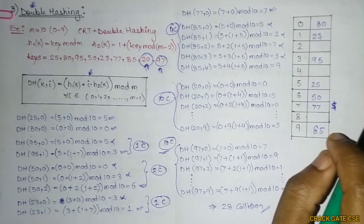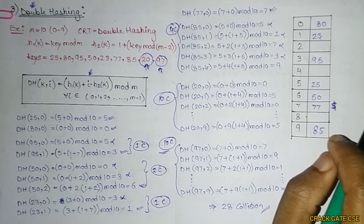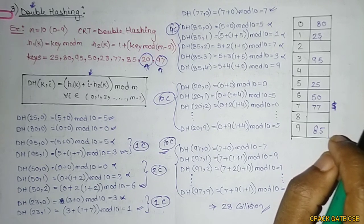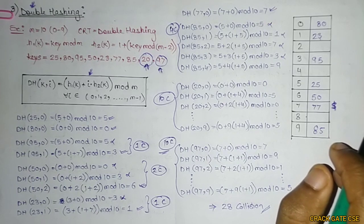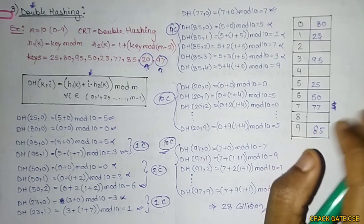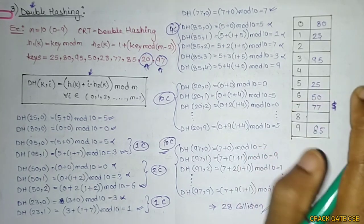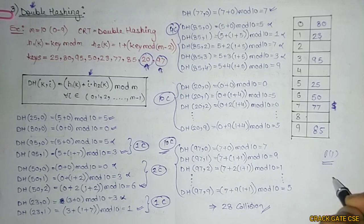In the next video, we will discuss primary clustering and secondary clustering — problems of linear probing and quadratic probing respectively. We'll cover advantages, disadvantages, and numerical concepts. After that, we'll look at how to achieve perfect hashing and how to reach O(1) time complexity, which is the ultimate goal of hashing.